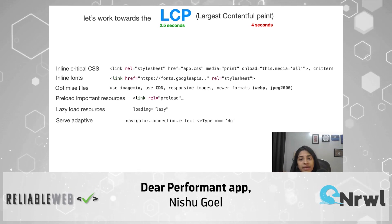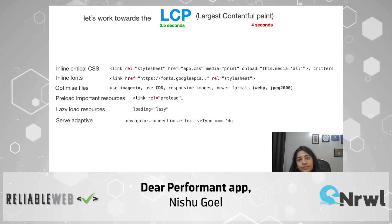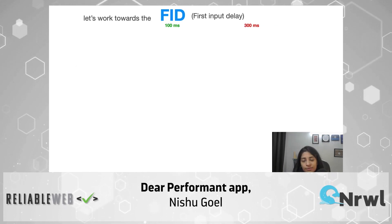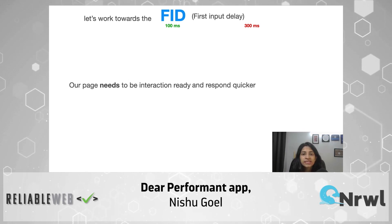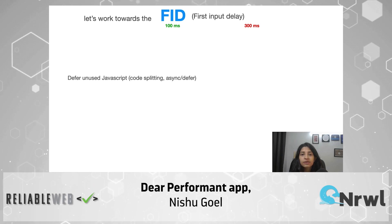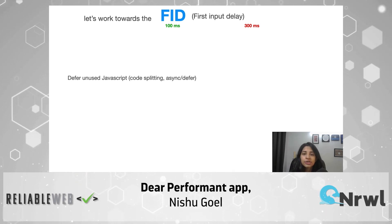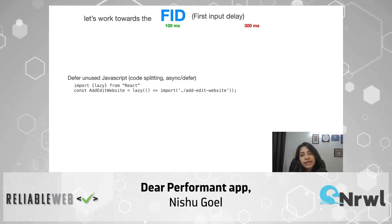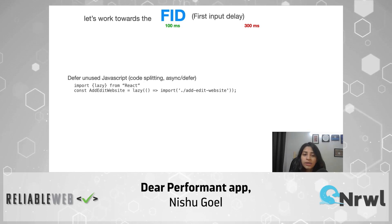These are the different actions towards better LCP and better performance, which might not bring the number from 6.7 seconds to 2, but will definitely bring it to 3 or 4. Now let's look at the interactivity bit — improving the first input delay of your application. To improve FID, you can use code splitting: creating a bundle out of JavaScript that you don't need immediately, or complex code that's only required at a later stage. Such bundles can be loaded on demand. React supports this by default — you can import lazy from React to import any module lazily.